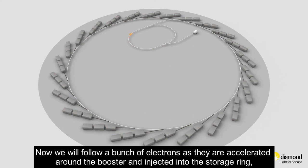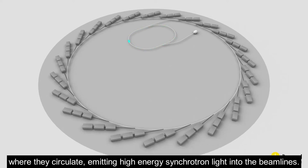Now we will follow a bunch of electrons as they are accelerated around the booster and injected into the storage ring, where they circulate emitting high energy synchrotron light into the beamlines.